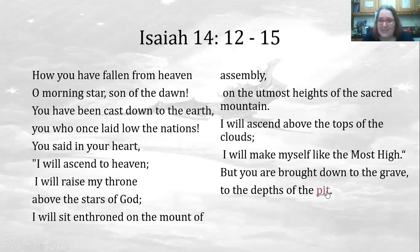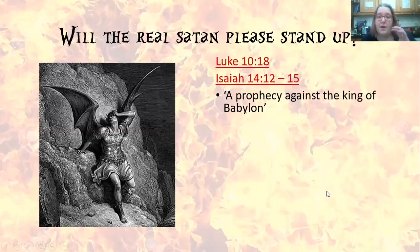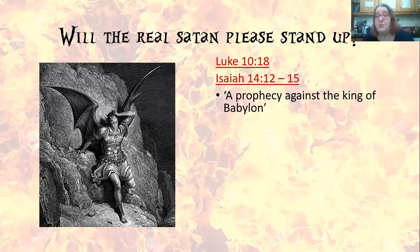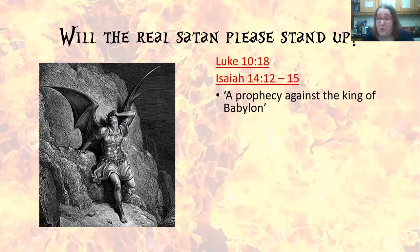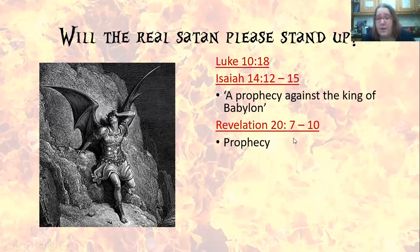Here we clearly see some elements of the satanic story — the overweening pride, the challenging of God — but the problem is the context in which this is written. This Isaiah verse is actually in a prophecy against the king of Babylon. It's often been read in both the Judaic and Christian theological traditions as relating potentially to a satanic figure, but we don't have a very clear narrative or certainty that this is what's going on.